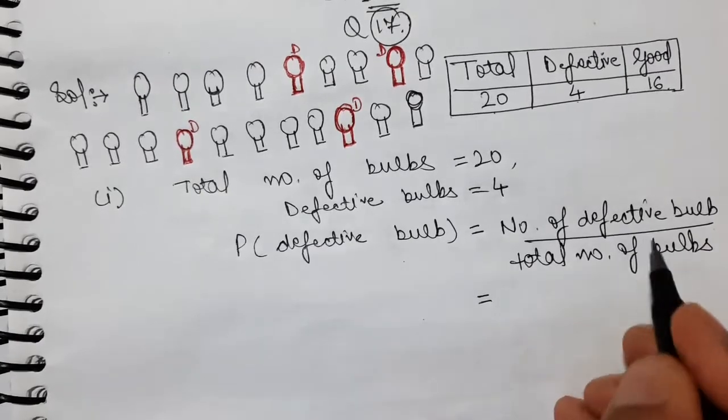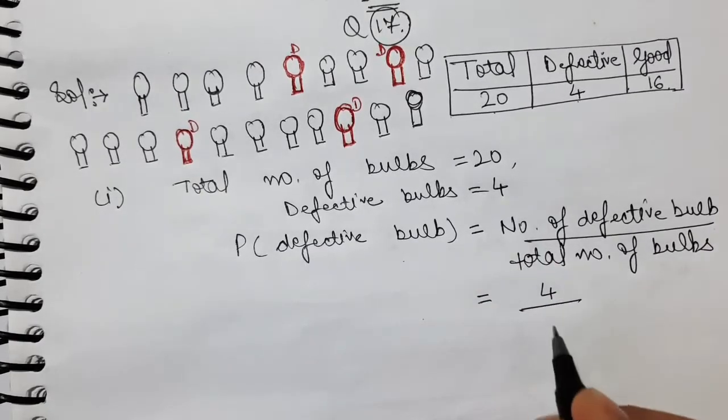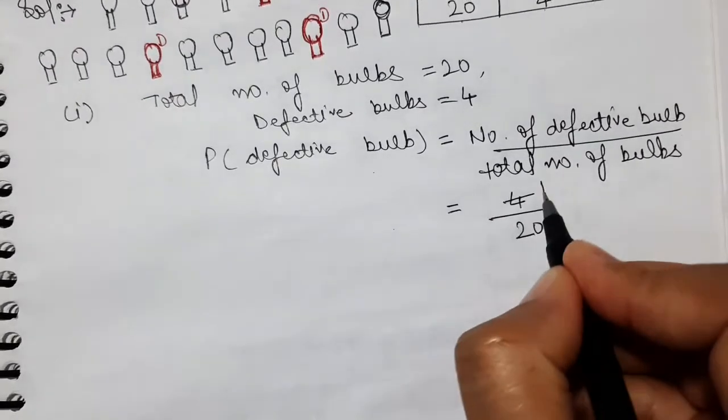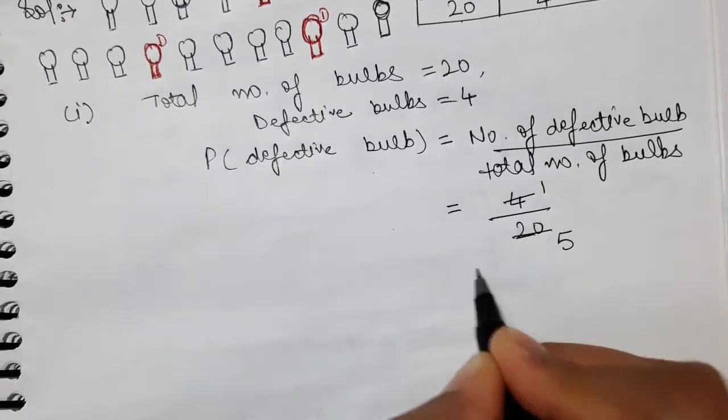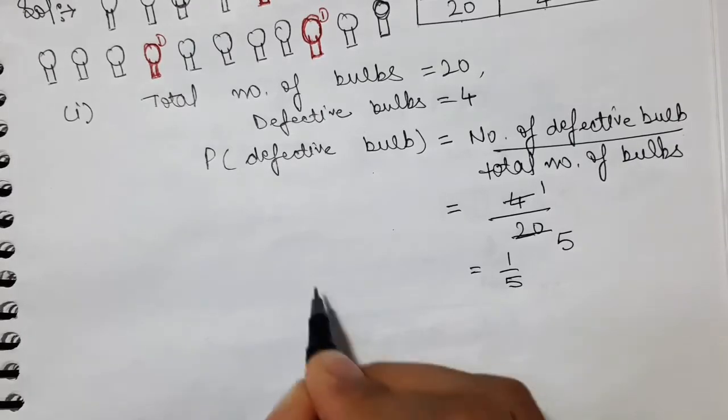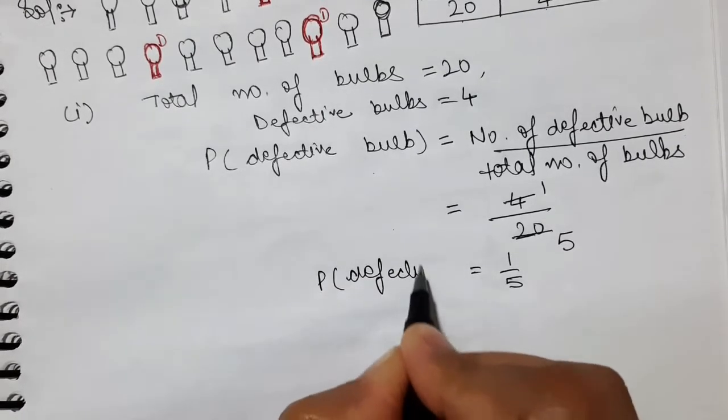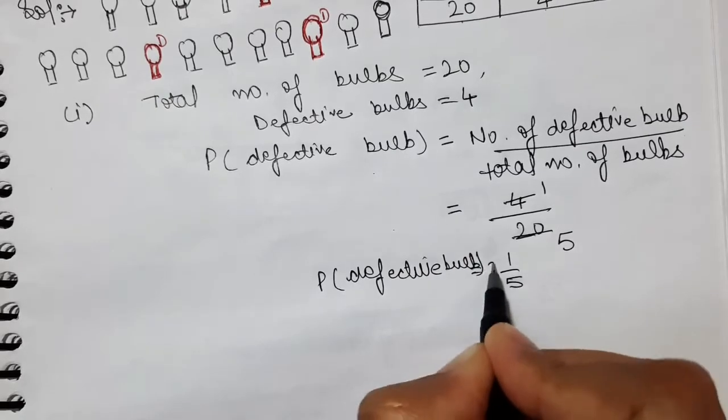We have total number of bulbs. So, 4/20 equals 1/5 is the answer of getting the probability of getting defective bulbs. So, this is the answer of our first part.